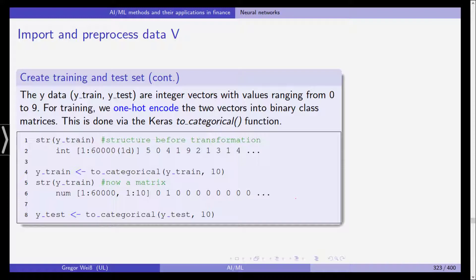The y-data are integer vectors with integers ranging from 0 to 9. For training, we one-hot encode the two vectors into binary class matrices. This is done via the Keras to_categorical function. You can see here the structure before transformation is 5, 0, 4, 1, 9, 2, 1, 3, 1, 4. This was our first image, the 5. If we do this to_categorical y-train and 10, you can see this is now a matrix. We now have categorical or binary variables. For example, the first observation - is this a 0? No. Is this a 1? Yes. And we get 0, 1, 0, 0, 0, 0, etc.